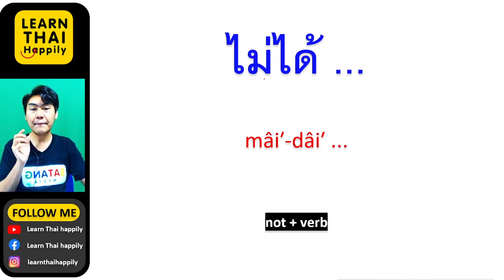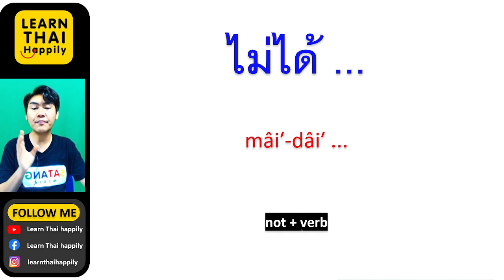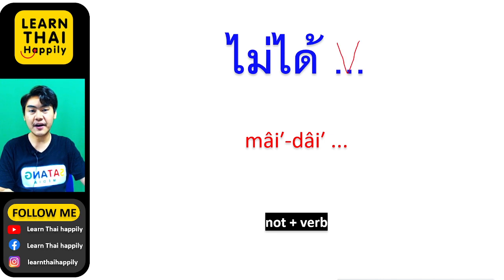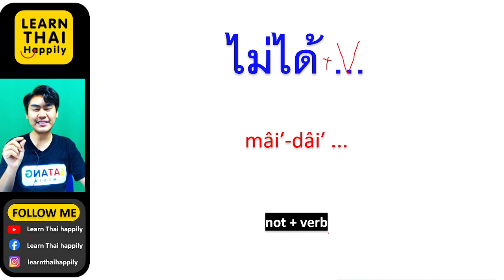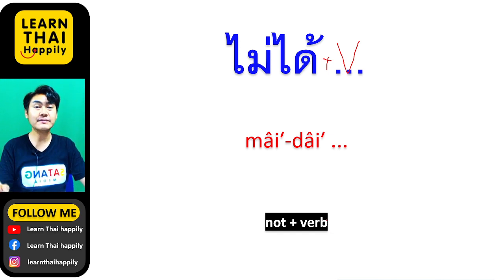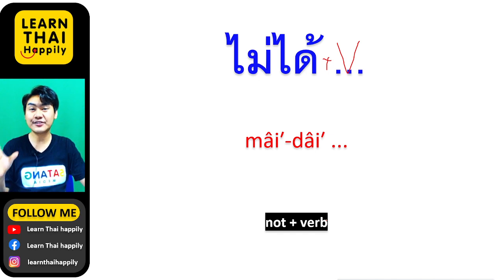And the next one: ไม่ได้ followed by a verb. In Thai, ไม่ได้ plus verb means 'not' and verb. It's quite confusing, right? But I have some example sentences for you guys and you will understand more. You can learn from them.